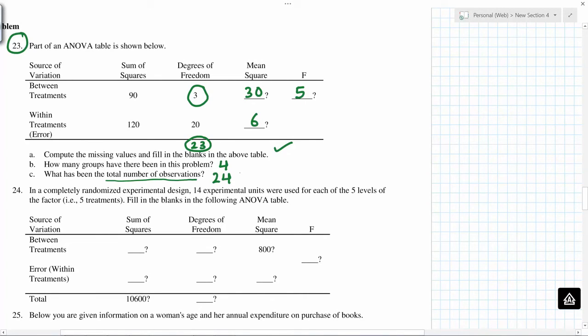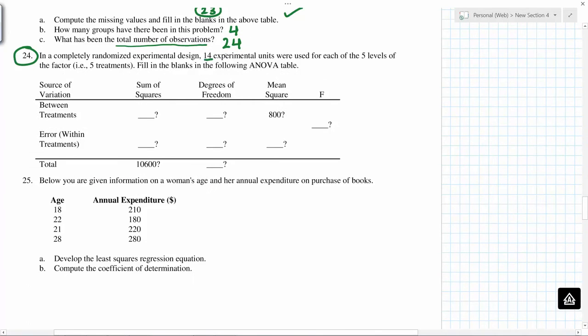14 experimental units were used for each of the 5 levels of the factors. So 5 means 4 degrees of freedom. And because there were 14, so 14 times 5 is 70. So this is 69, so this becomes 65.